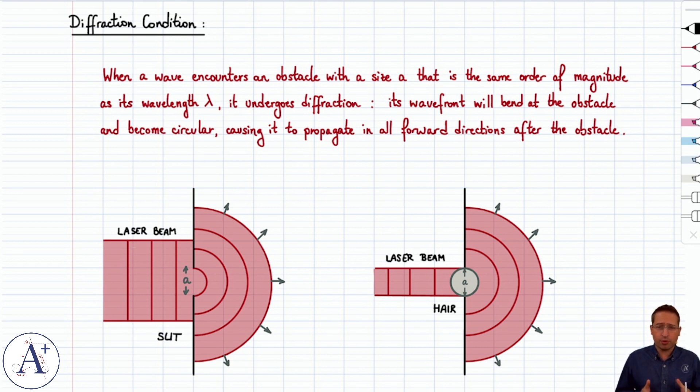We say obstacle on purpose because it doesn't matter whether you have a slit or a hair in the case of the laser beam that I drew. The slit, everybody's kind of on board. The hair seems weird - why would light bend at a hair?